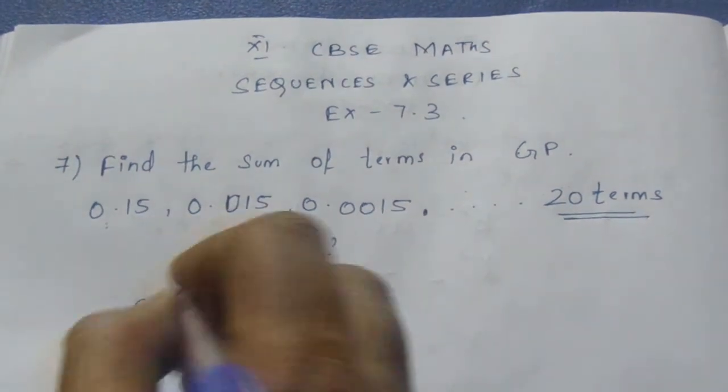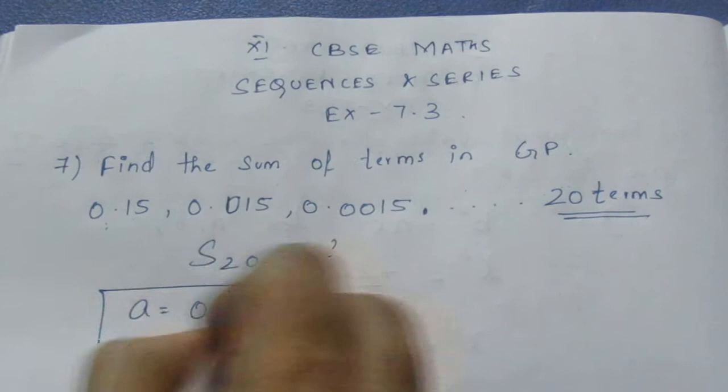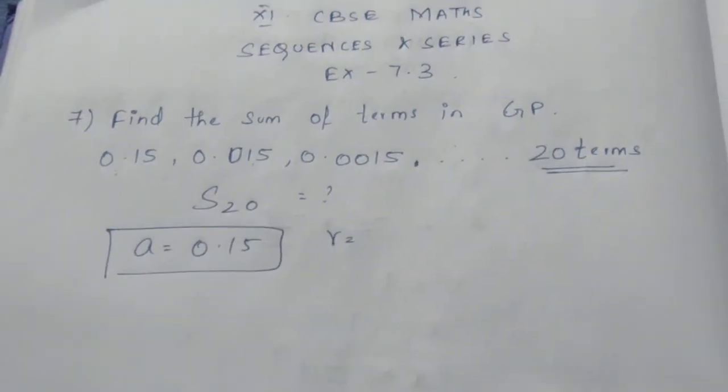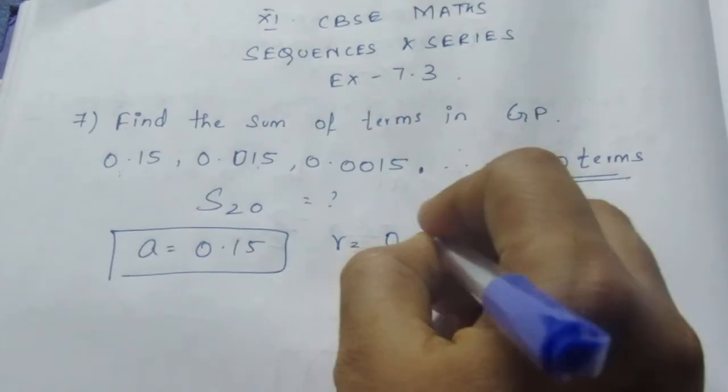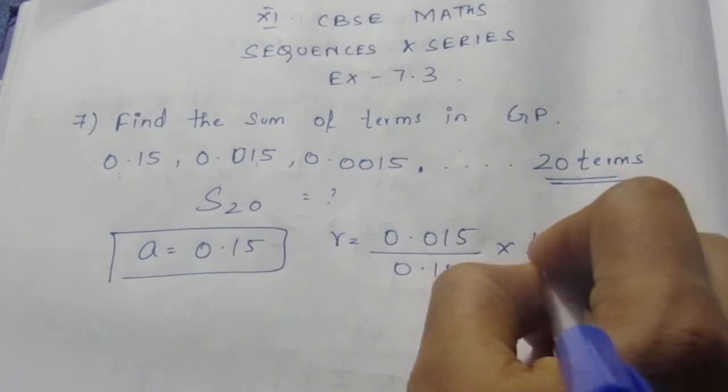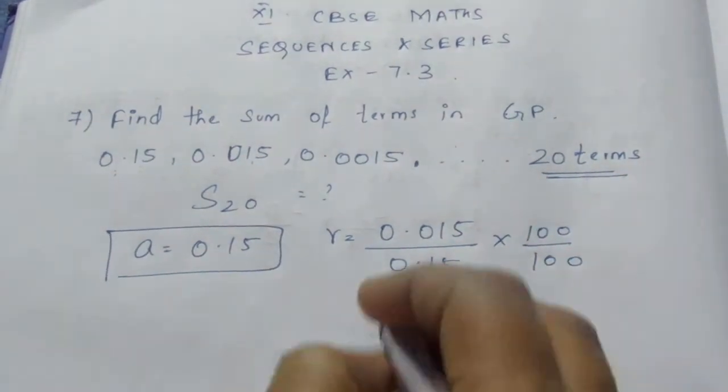Here we know that the first term is 0.15. We need to find R. So R equals second term by the first term. Second term here is 0.015 by 0.15. Multiply and divide by 100 so that the decimal point will go off.